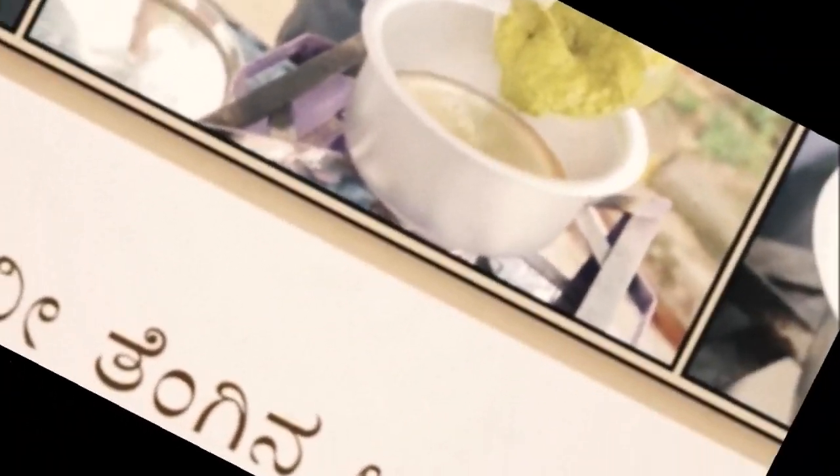परजीवी त्वचा रोग के लिए: करंज तेल, लहसुन, अर्क, हल्दी पाउडर, नीम अर्क, कपूर, और प्याज अर्क युक्त पेस्ट लगाया जा सकता है। फंगल संक्रमण के मामले में: लहसुन का पेस्ट बनाकर प्रभावित हिस्से पर तब तक लगाना चाहिए जब तक ठीक न हो जाए।